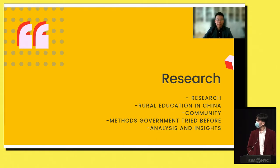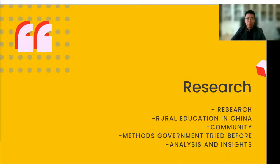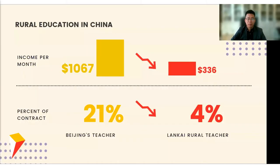In China, rural education is in a vicious circle. There is a growing gap in the quality of education between urban and rural areas. The main reason is the loss of excellent rural teachers. As designers of social innovation, we want to change that. The income of teachers in cities is almost three times that of teachers in the countryside, and urban teachers are much more likely to get formal work contracts than rural teachers. The pressure caused by this gap has led an increasing number of rural teachers to want to leave the countryside.